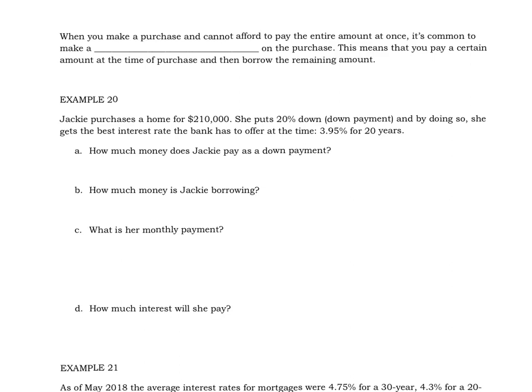Anytime you make a purchase and you can't afford to pay the entire amount at once, it is very common to make a down payment, which means that you give them some money upfront and then you borrow the rest. When you buy a house, for example, the bank isn't just going to loan you every penny — they're first going to ask how much you can afford to pay right away. Typically they want 10 to 20 percent of the purchase amount up front.